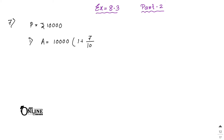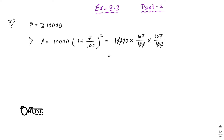So that means: 10,000 into (107/100) whole squared — that is, 107 into 107. That gives us eleven thousand four hundred forty-nine. So rupees 11,449 is your first answer.